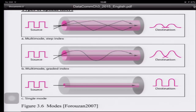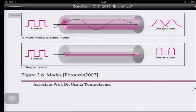The second type is multimode graded index fiber. In this case, the change in density at the interface is gradual rather than sharp, making the reflections smoother and resulting in less dispersion. However, there are still multiple light paths, so some dispersion still occurs.